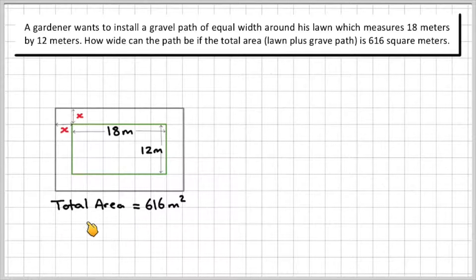Now I know from the question that the total area is 616 metres squared. So all of this, the entire thing, including the path and the lawn, is 616 metres squared.